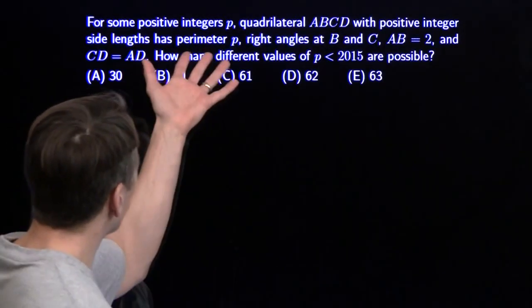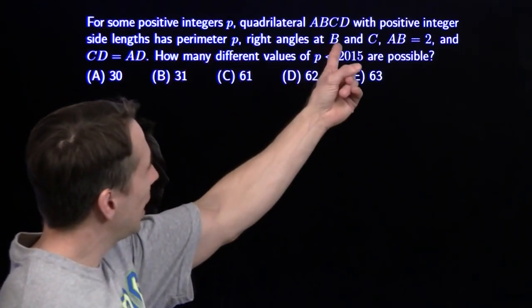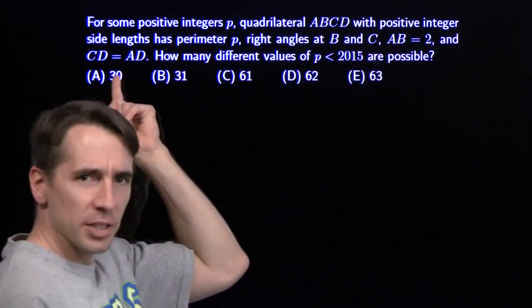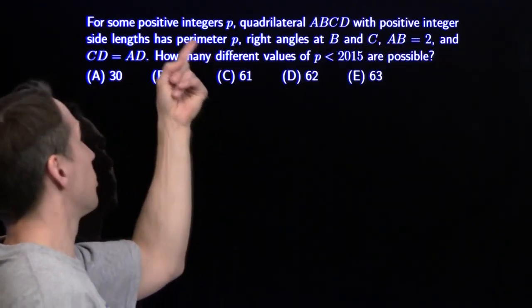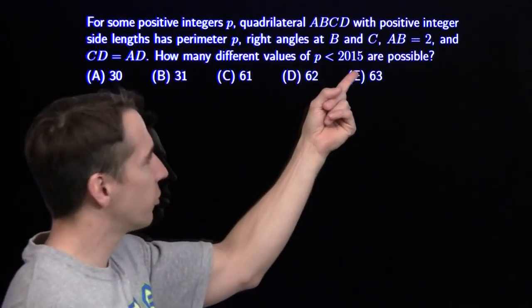Let's see what we have here. For some positive integers P, quadrilateral ABCD with positive integer side lengths has perimeter P, right angles at B and C.